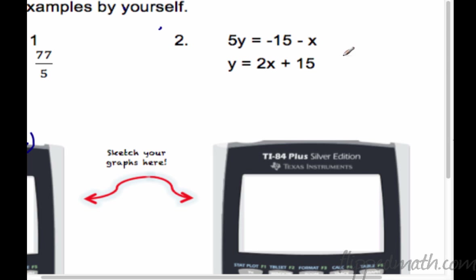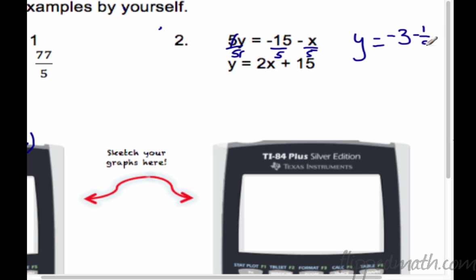Looking at number 2, you have to solve each equation for y. For the first one, divide everything by 5 — the 5s cancel and you get y equals negative 3 minus 1/5 x. Remember: when you have x over 5, you can write it as 1/5 x. Some of you might say that's not in slope-intercept form — it's supposed to be mx plus b — but you can leave it as is; the calculator will graph it the way it is. The second equation is already solved for y.